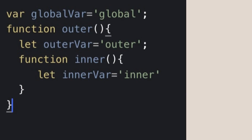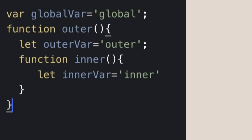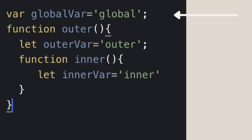Take an example right here. Here you have an inner function. This inner function can access the variable in its own scope, the variable from the outer function, and also the global variable.